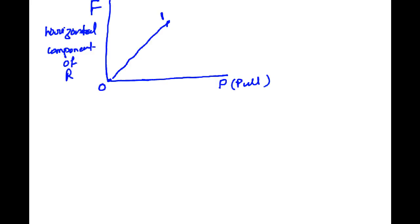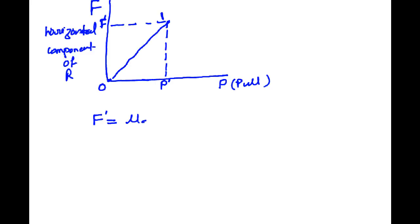At point 1, the value of P is P dash — the value at which the body just starts moving. The value of F at this point is F dash. This relation is given by the equation: F dash = μs × R. So F dash equals mu S into R.